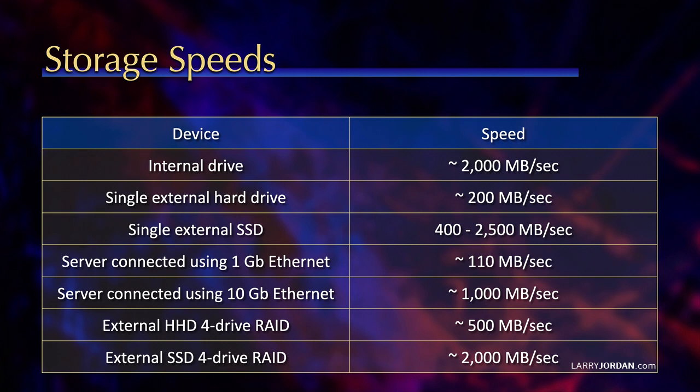If we convert to 10 gig ethernet — which requires a 10 gig port on the back of your computer, CAT6 or CAT6e cable, a 10 gig switch, and a 10 gig port on the back of your server — your speeds can get close to 1,000 megabytes a second. Still not as fast as a single SSD, but you have all the advantages of a server sharing files.